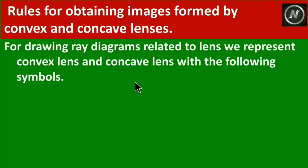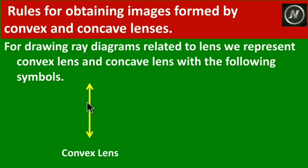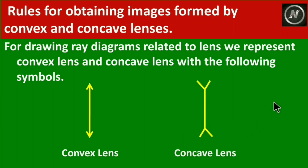For drawing ray diagrams related to lenses, we represent the convex lens and concave lens with specific symbols. We use one symbol for the convex lens and another for the concave lens. Like concave and convex mirrors, for convex and concave lenses also, there are four rules, and we can use any two of these rules to draw ray diagrams.